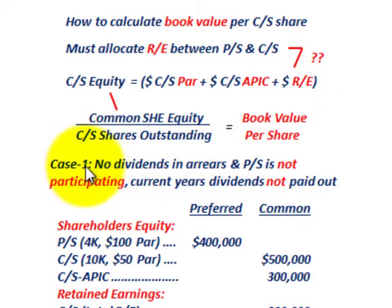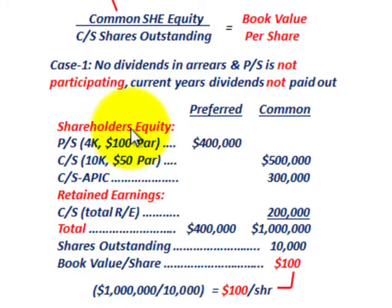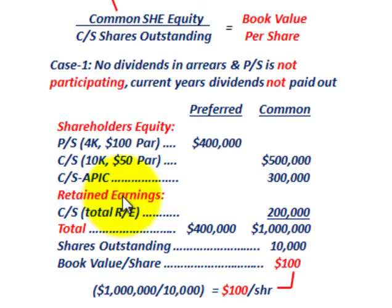We're going to look at two different cases. One where the preferred stock is going to affect the common stock's book value per share, and then the base case where it doesn't. For Case 1, there are no dividends in arrears on the preferred stock and it is non-participating. The current year dividends are not paid out yet. We need to break down the shareholders' equity portion assigned to preferred stock and common stock, including the retained earnings allocation.